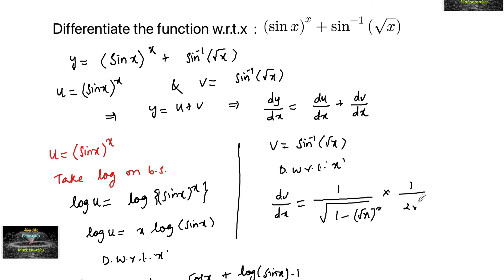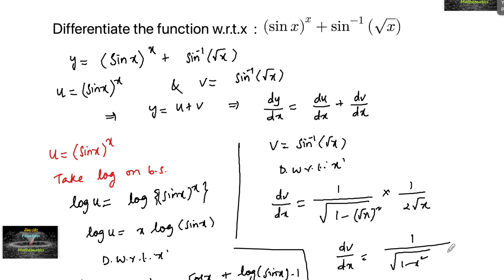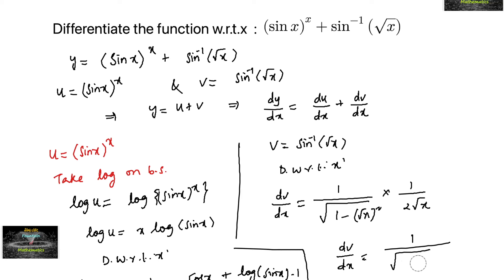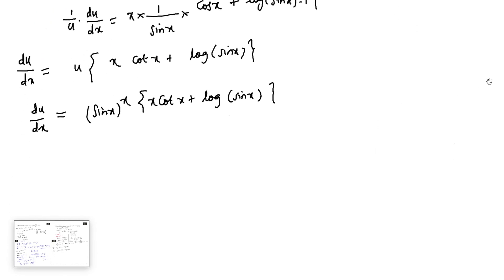For dv/dx, since v = sin⁻¹(√x), by the chain rule: dv/dx = 1 / √(1 - (√x)²) · (1 / 2√x), which simplifies to 1 / (√(1 - x) · 2√x).